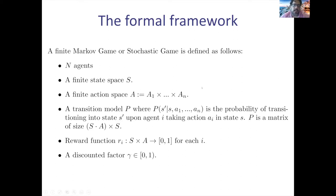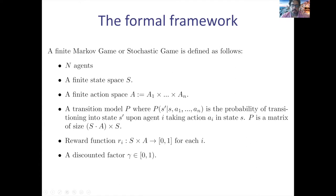In particular, you have N agents, a finite state space S, and a finite action space. The action space is the Cartesian product of the action sets of all the agents. You also have a transition model that captures the probability of transitioning from state s to state s' given that the agents chose actions a₁ up to aₙ. This is a stochastic matrix of size |S| × |A| × |S|, where |A| is the product of the cardinalities of each agent's action set.